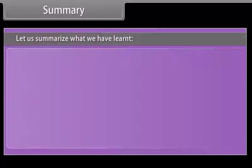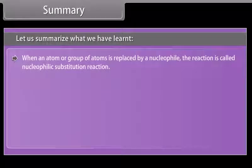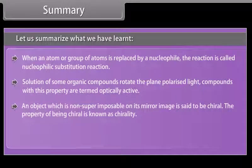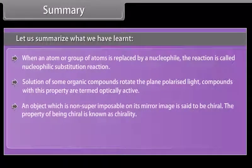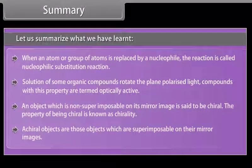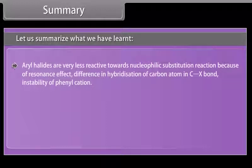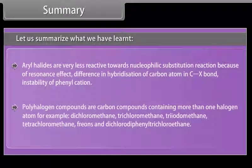Let us summarize what we have learnt. When an atom or a group of atoms is replaced by a nucleophile, the reaction is called nucleophilic substitution reaction. Solution of some organic compounds rotate the plane polarized light, and compounds with this property are termed optically active. An object which is non-superimposable on its mirror image is said to be chiral. The property of being chiral is known as chirality. Achiral objects are those objects which are superimposable on their mirror images. Aryl halides are very less reactive towards nucleophilic substitution reaction because of resonance effect, difference in hybridization of carbon atom in C-X bond, and instability of phenyl cation. Polyhalogen compounds are carbon compounds containing more than one halogen atom, for example, dichloromethane, trichloromethane, triodomethane, tetrachloromethane, freons, and dichlorodiphenyltrichloroethane.